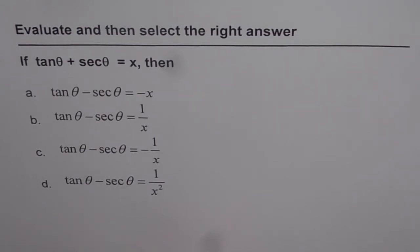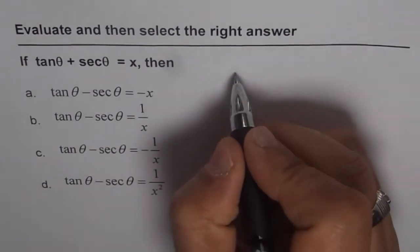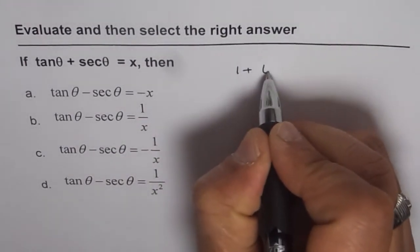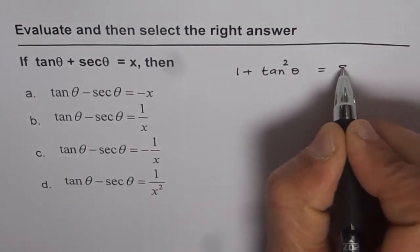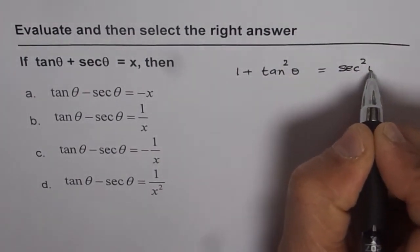So before making a choice, let us try to explore it. What we know is that 1 plus tan square theta equals to secant square theta.